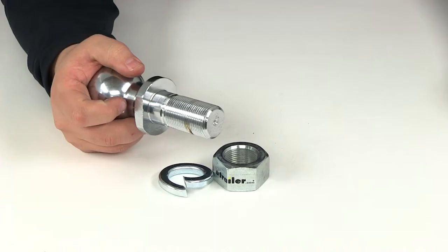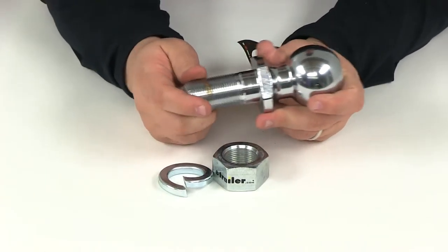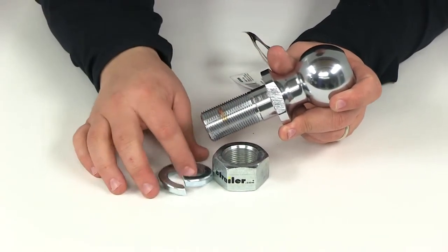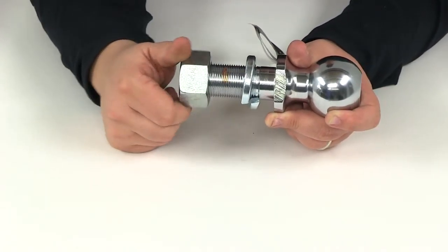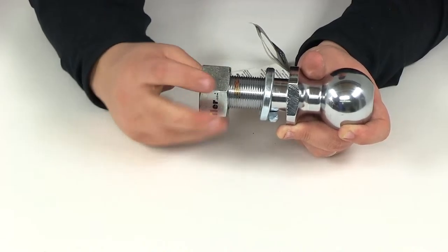Really simple installation though. The hitch ball is going to go straight through that opening on your ball mount. You're going to place on the lock washer as well as the nut, and then you're going to get everything tightened down.